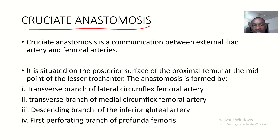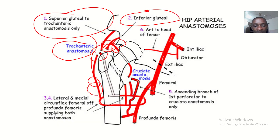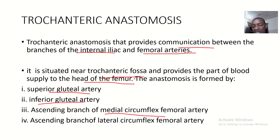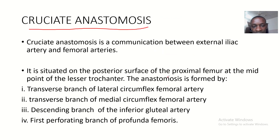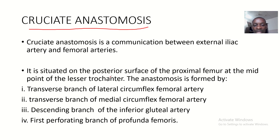The cruciate anastomosis is located on the medial side, and again four arteries meet at this level. The cruciate anastomosis is a communication between the external iliac and the femoral artery — whereas the trochanteric anastomosis was a communication between the internal iliac and the femoral artery. It is situated on the posterior surface of the proximal femur at the midpoint of the lesser trochanter.